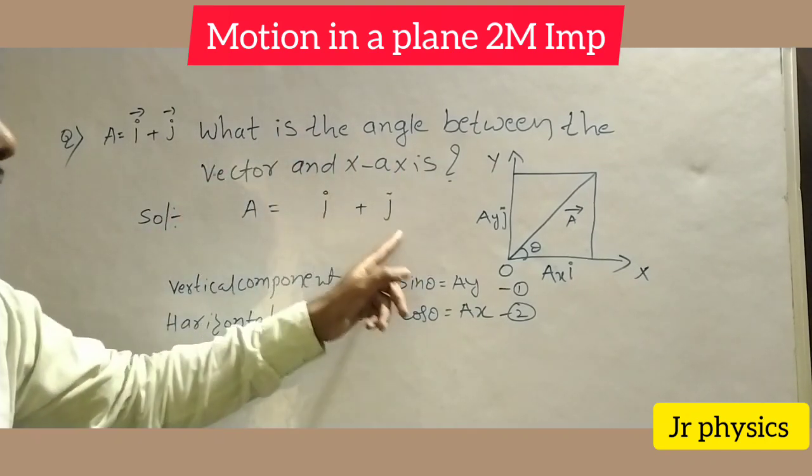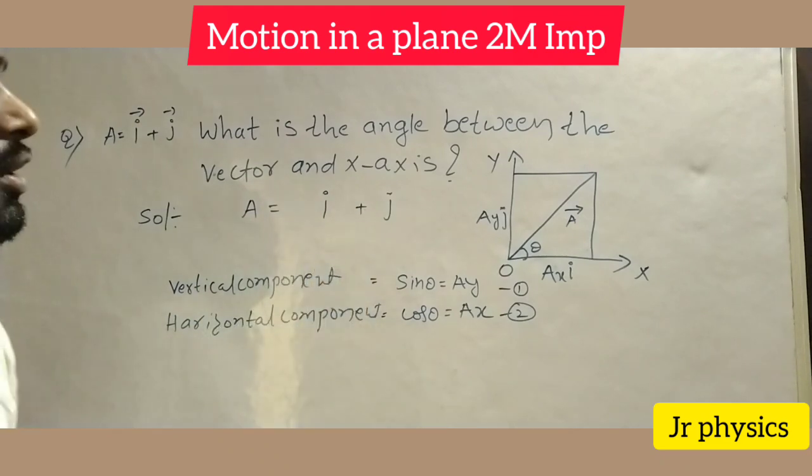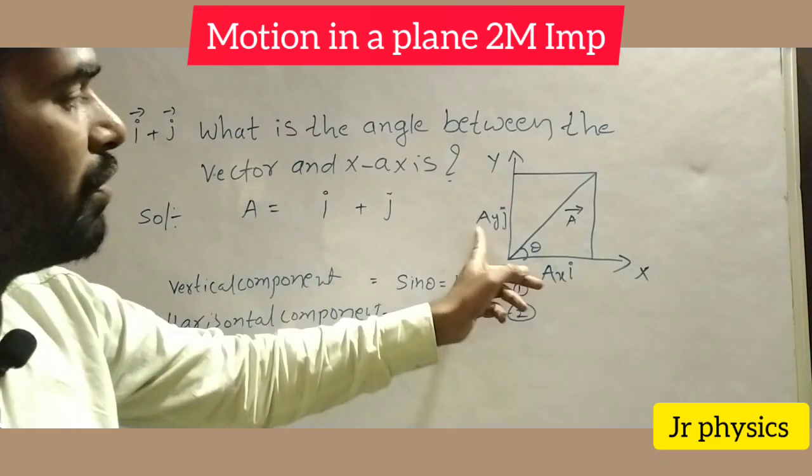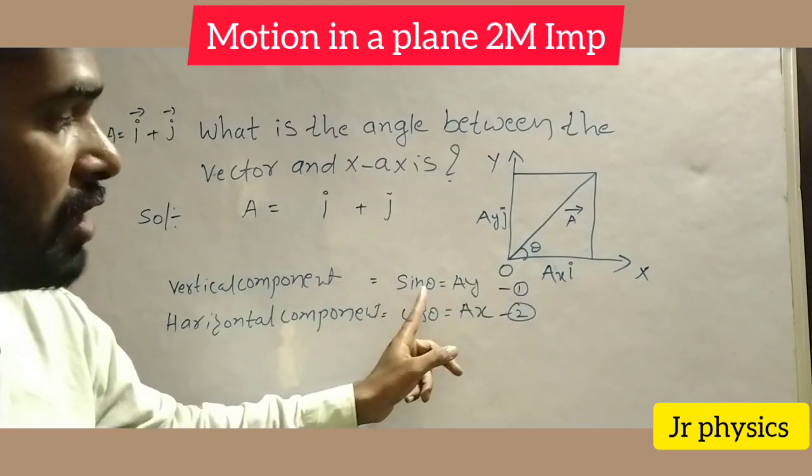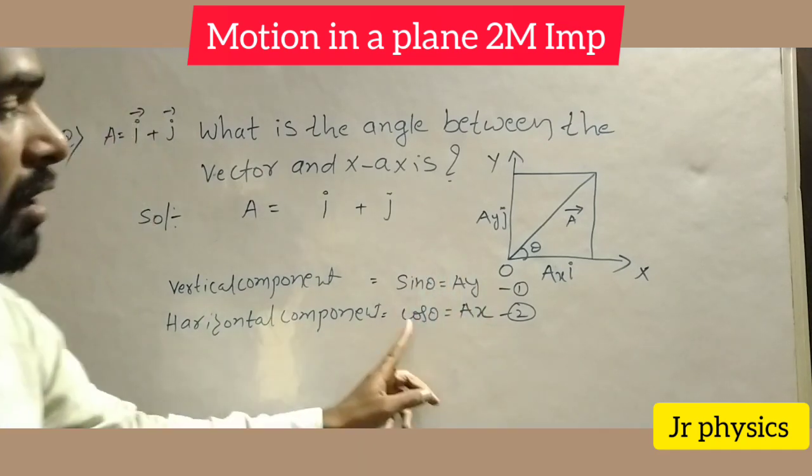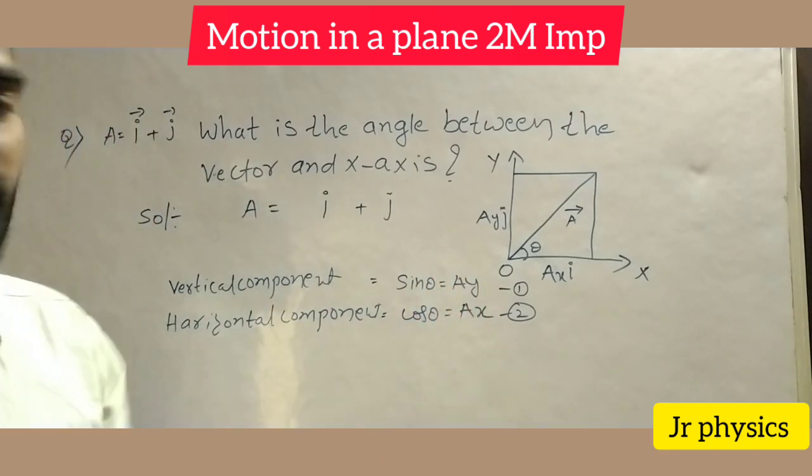Okay, solution: A equals i plus j. So here we have horizontal component, vertical component. Vertical component sin theta equals ay, horizontal component cos theta equals ax.